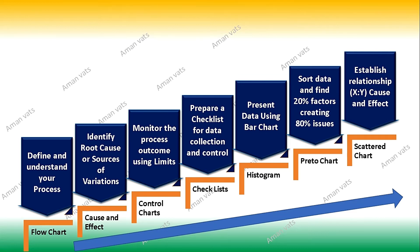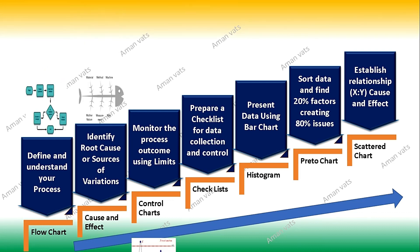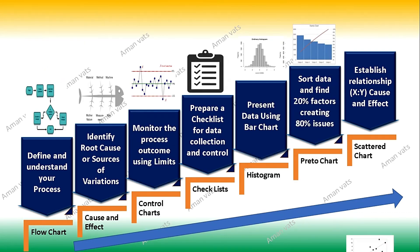I'll talk about each and every aspect of project management. I have been providing training and am still providing training to PMP candidates. I cleared my PMP in September 2007, and since then I've had good exposure providing trainings on both national and international platforms. So to recap, the seven tools of quality are: flow chart, cause and effect diagram, control chart, checklist, histogram, Pareto chart, and scatter chart.